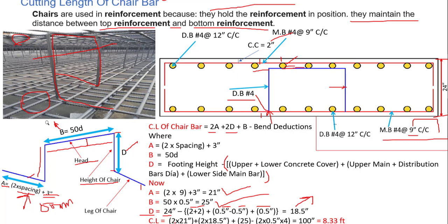Now the cut length = 2A + 2D + B − bend deductions. This chair has 4 bends at 90 degrees, so bend deduction = 2D × 4. Substituting: 2(21) + 2(18.5) + 25 − 2(0.5)(4) = 100 inches, which equals 8.33 feet. So the cut length of this chair bar is 100 inches or 8.33 feet.